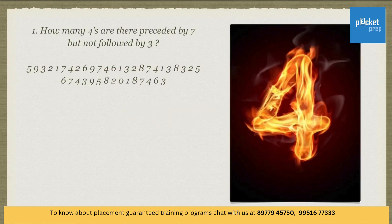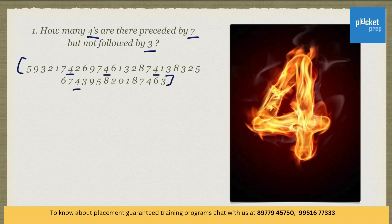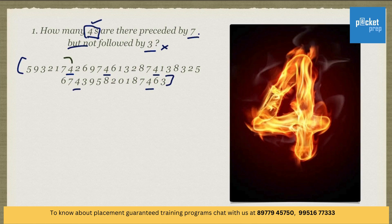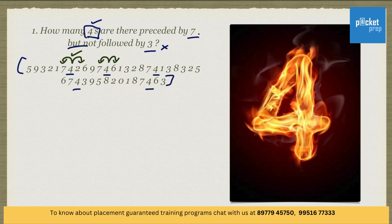Here is the first question. How many 4's are there preceded by 7 but not followed by 3? Here is the sequence of numerals. We have 5 fours in the given sequence. He is asking us to find out the number of 4's which are preceded by 7 but not followed by 3. Let's take the first 4 — it is preceded by 7 but not followed by 3, so this is a right answer. The second 4 is also preceded by 7 and not followed by 3, so both first and second 4 satisfy the given conditions.